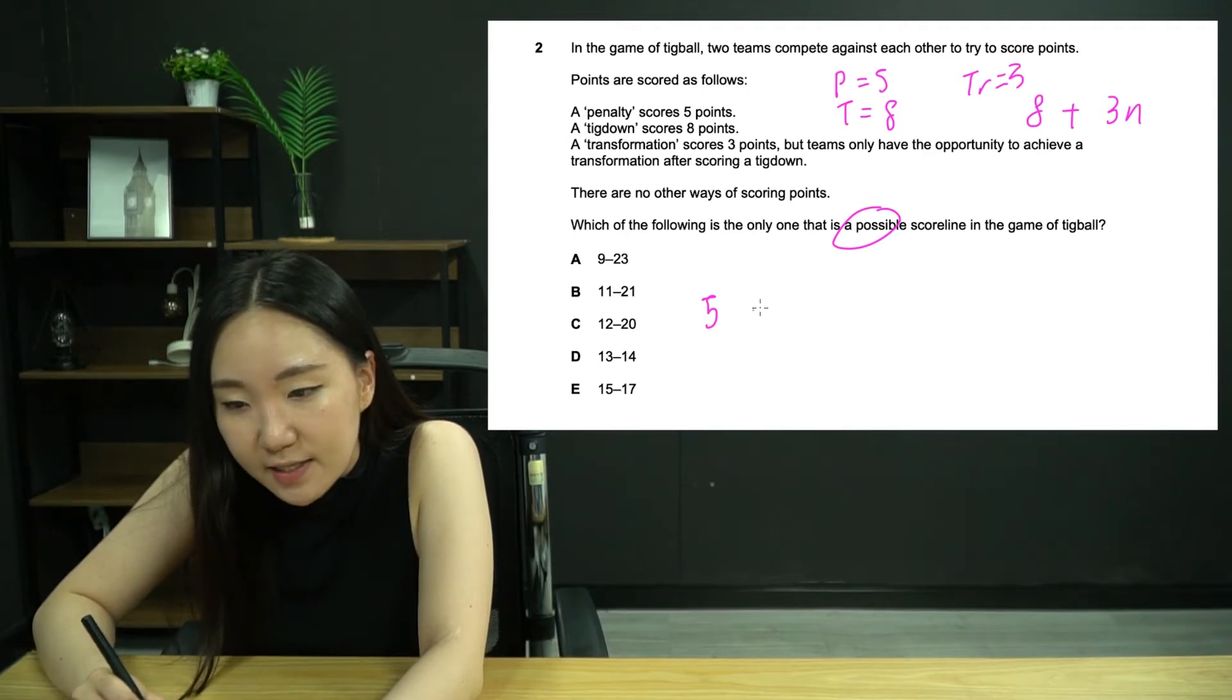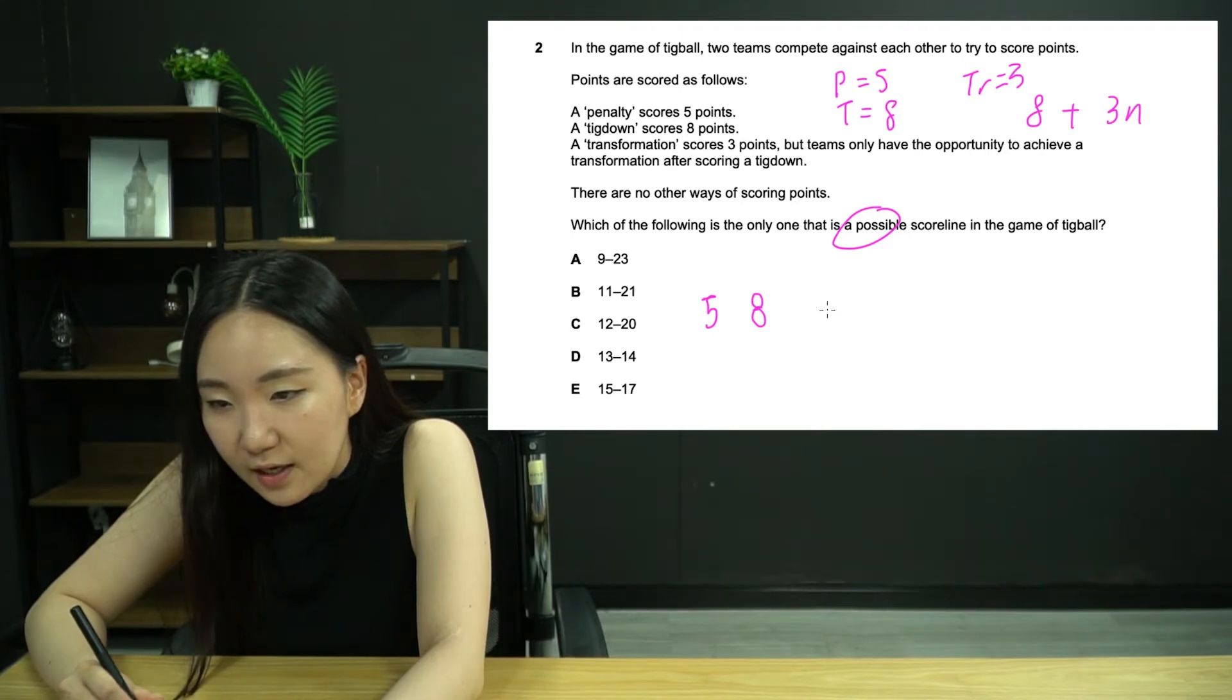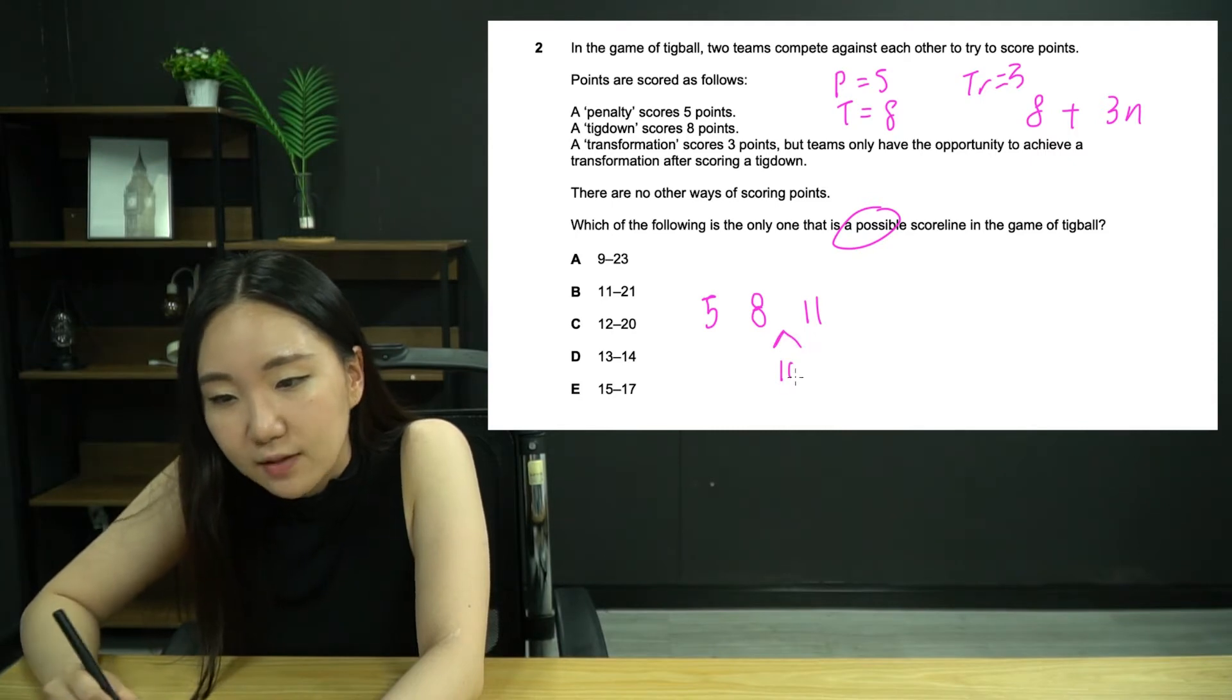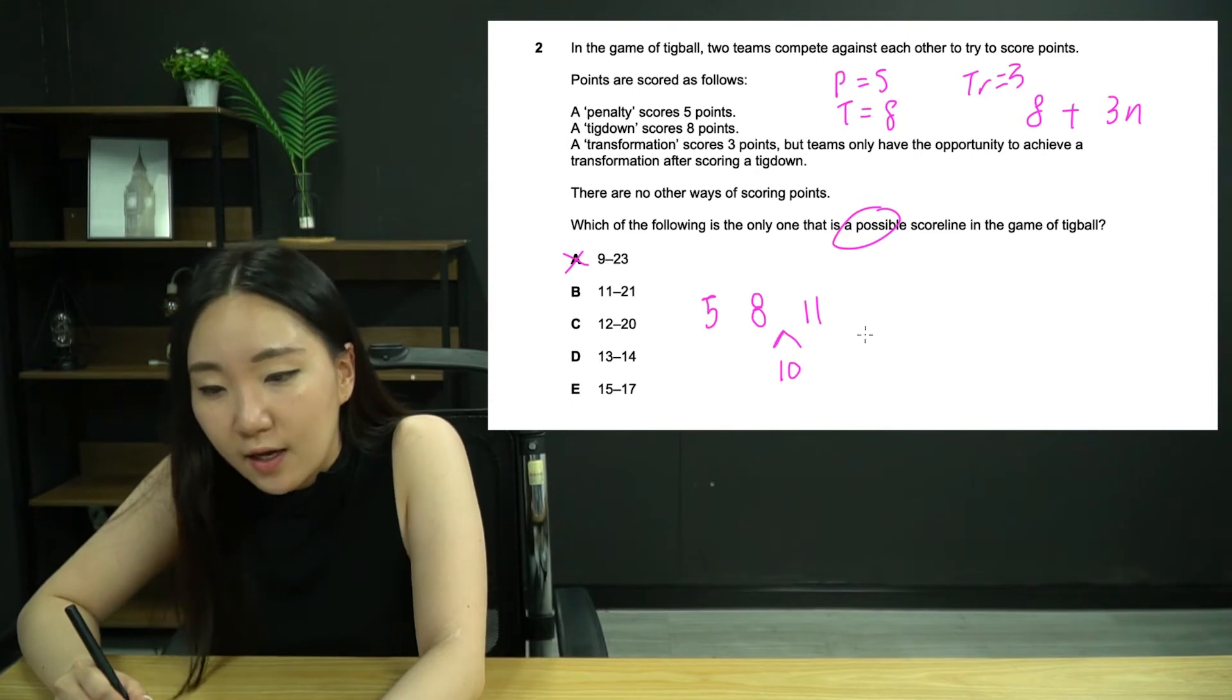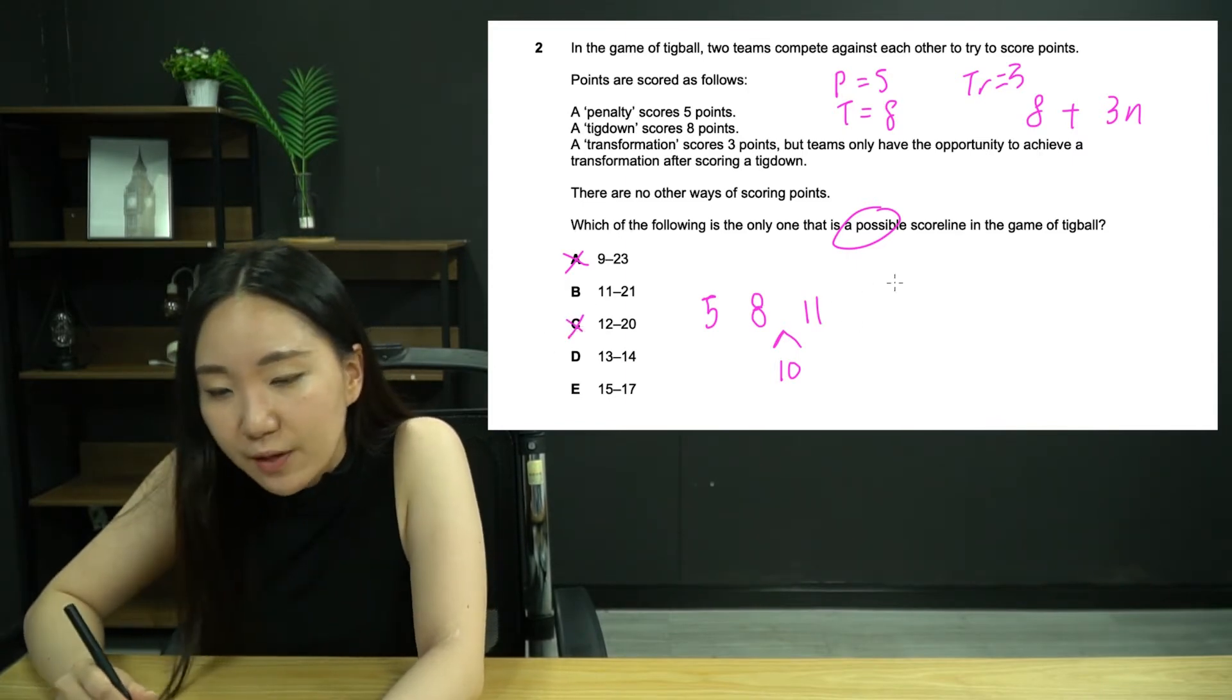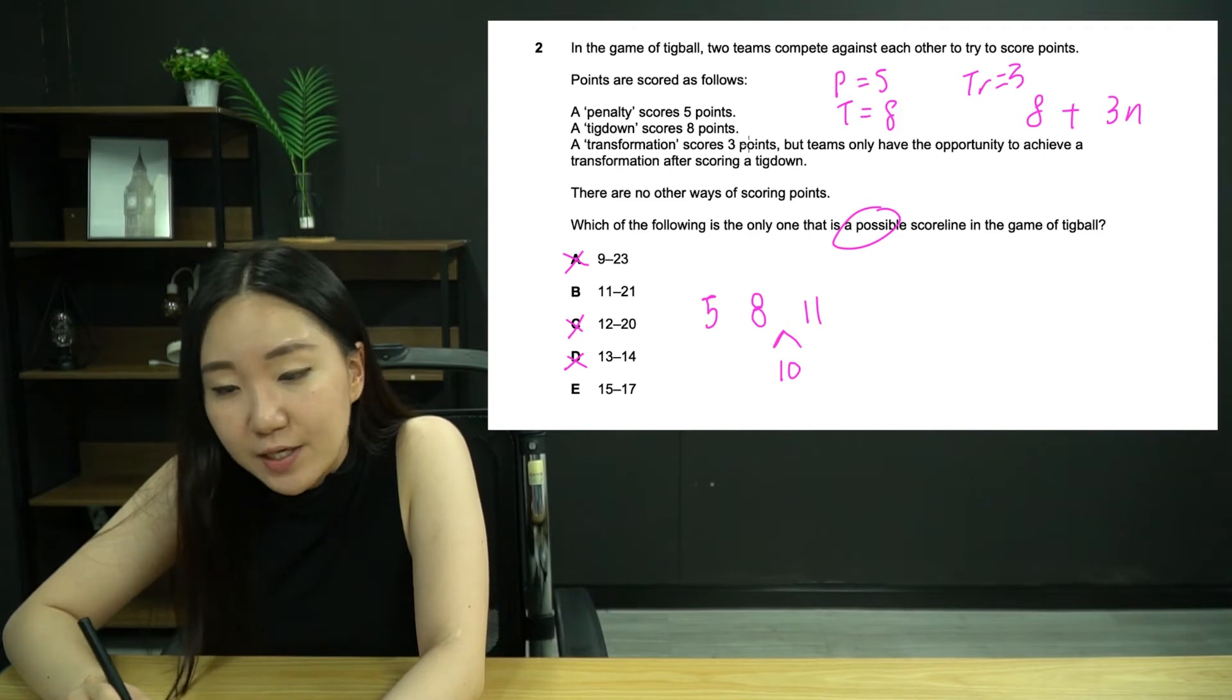I would probably just try and figure out how many of these, starting from smallest number I can achieve and then going upwards to 21. The smallest number is just a penalty by itself, so that's five. The second is just a tig down by itself, eight points. You could also get an eight and then add a three, so tig down plus transformation equals 11. You can score two penalties in a row, that's 10.